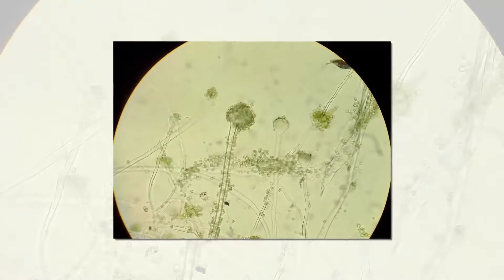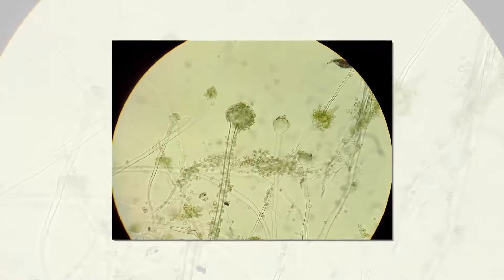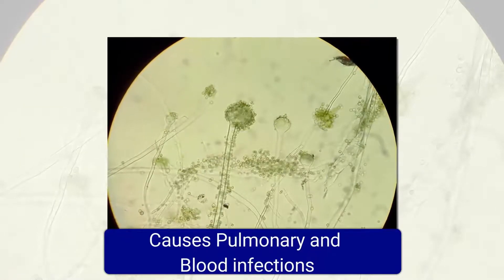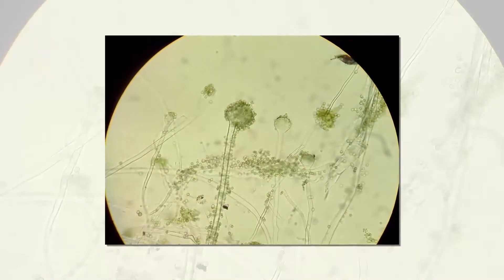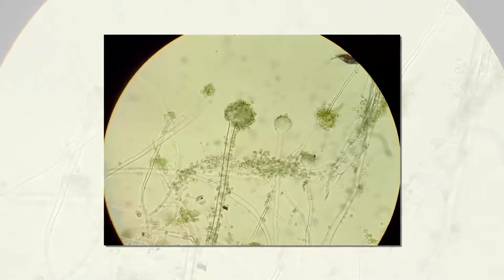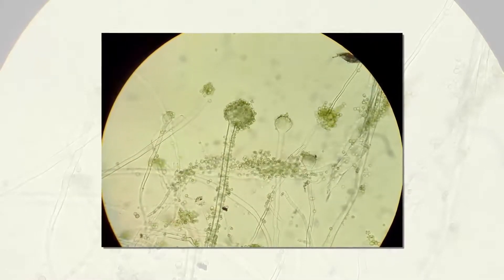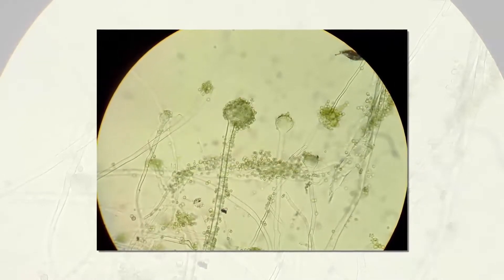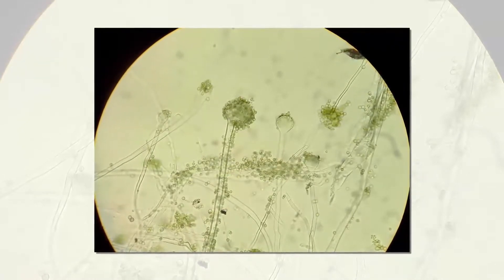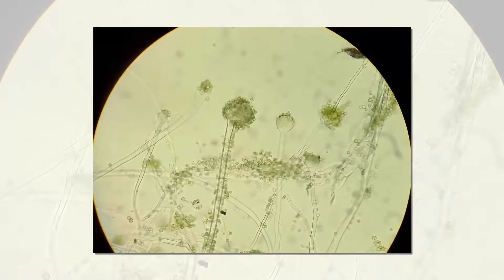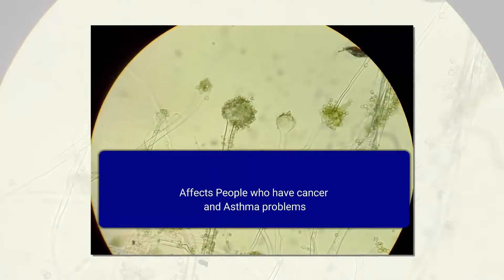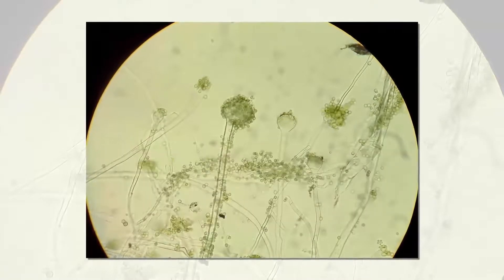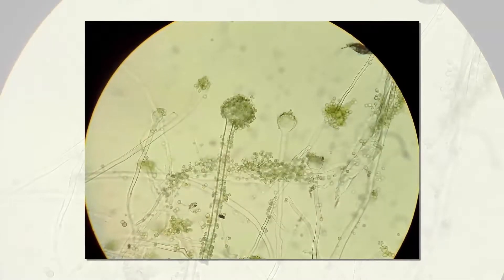Aspergillus is also one of the common bacterial moulds and causes pulmonary and blood infections. Aspergillus was first catalogued in 1729 by the Italian priest and biologist Pier Antonio Michele. It is found everywhere in the air. This bacterium commonly affects people with critical conditions like cancer and asthma. It is capable of causing serious heart and limb complications if not treated soon.